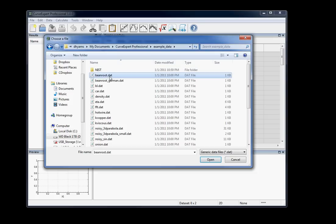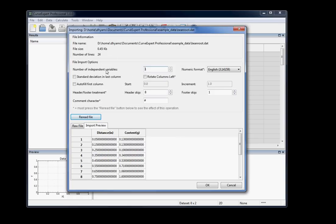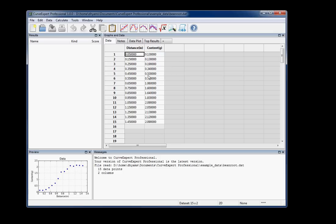Here we're just going to choose beanroot.dat, it's a good simple starter file to work with. So we'll just click Open, and for now we're just going to take the defaults in the File Import dialog, and you can see that the headers are preserved and nice things like that, and the data appears in your spreadsheet.